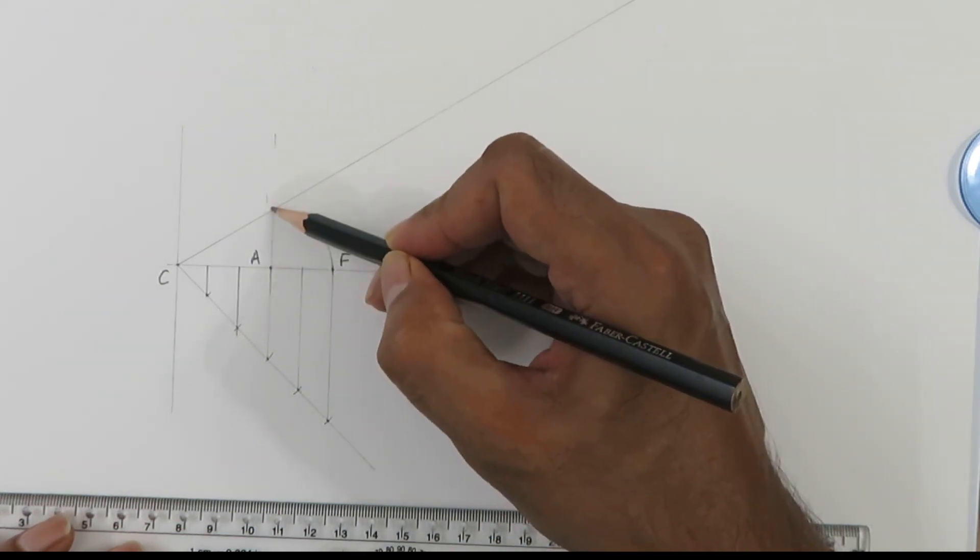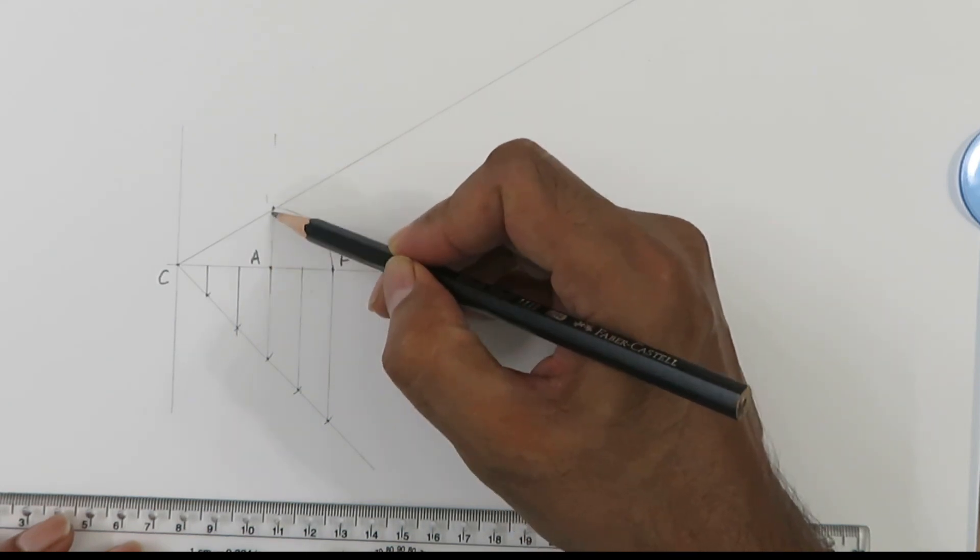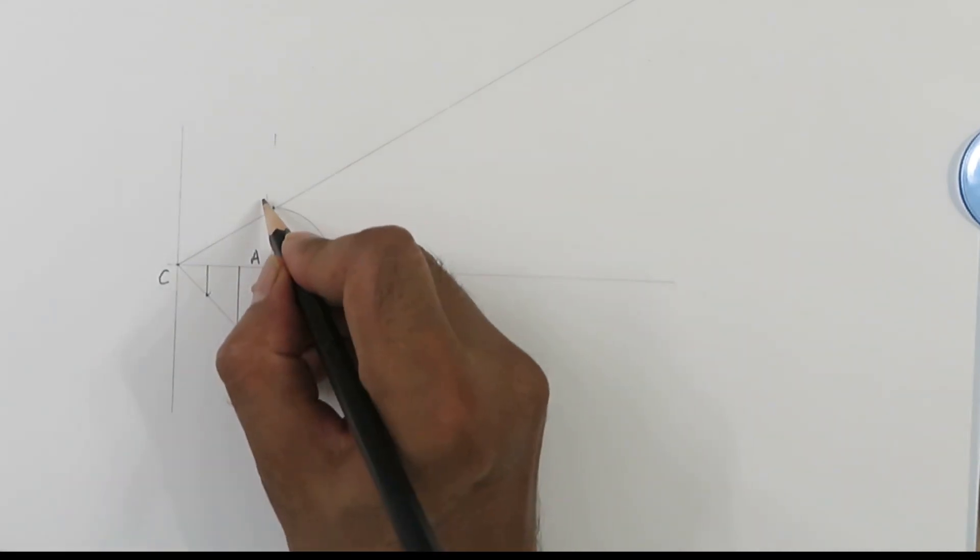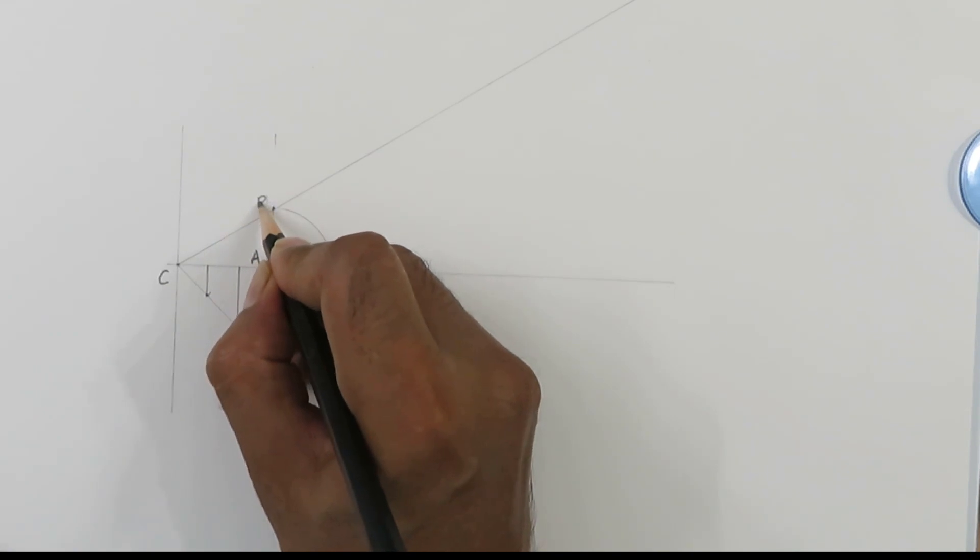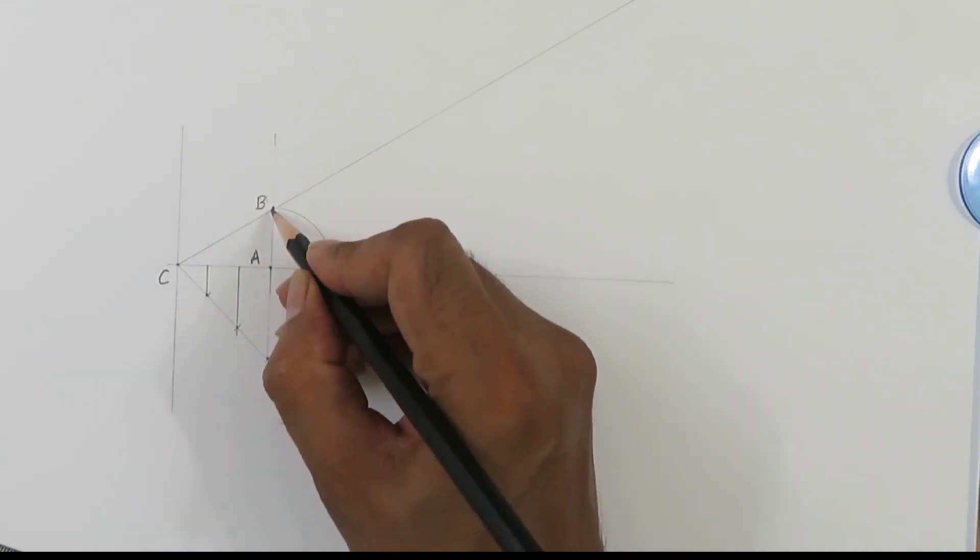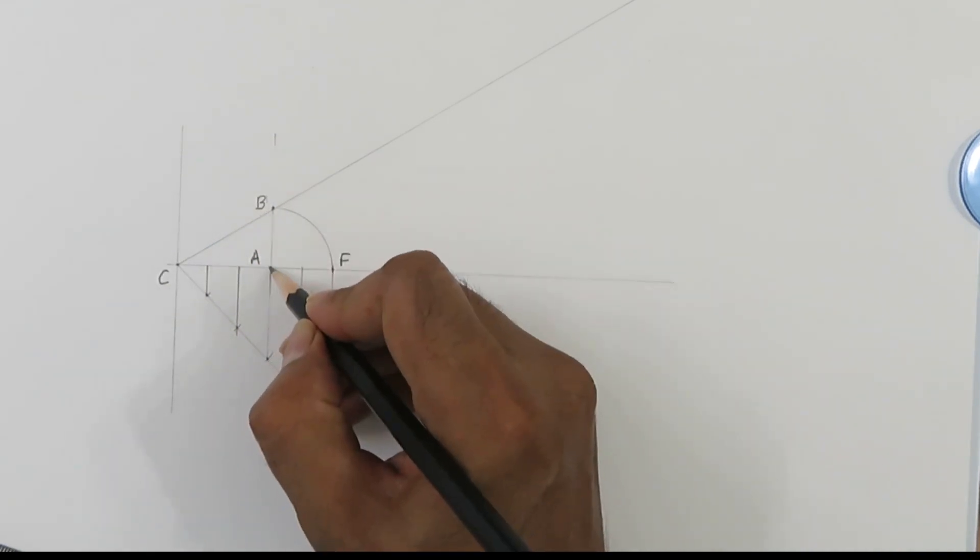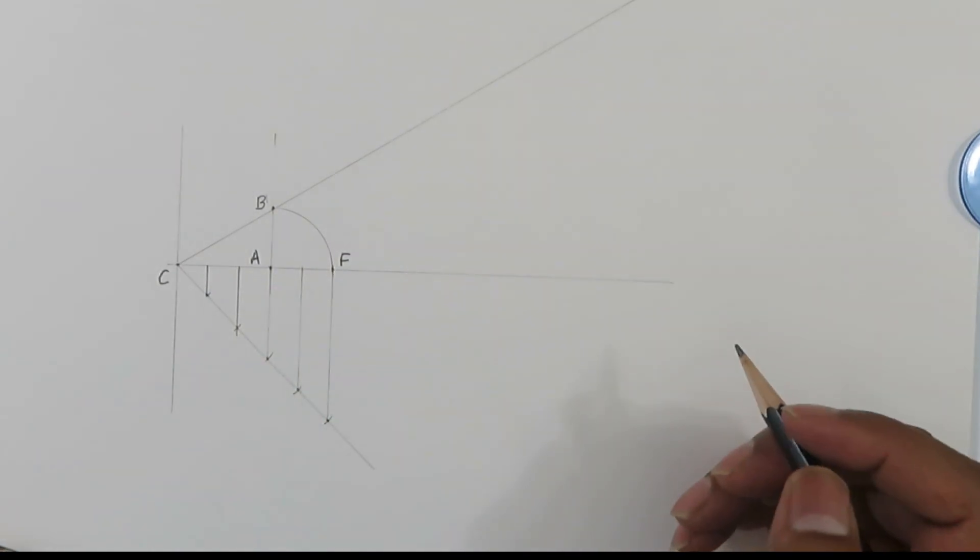Now we can see that this is 3 parts and this is 2 parts. We have made an arc. From here to here is 2 parts. If you take the ratio, for example, if I call it B, the ratio of BA over CA is 2 over 3.